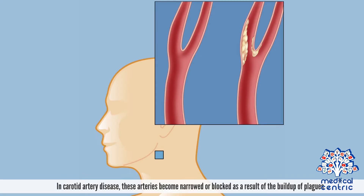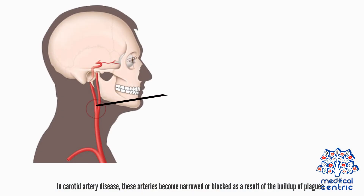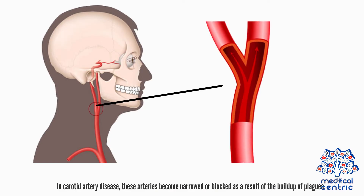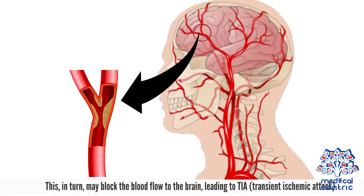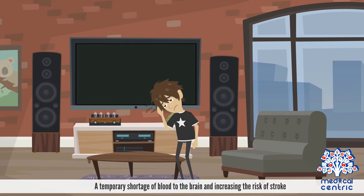In carotid artery disease, these arteries become narrowed or blocked as a result of the buildup of plaques. This in turn may block the blood flow to the brain, leading to TIA, or transient ischemic attack — a temporary shortage of blood to the brain — and increasing the risk of stroke.